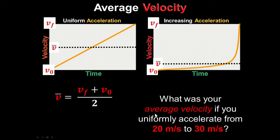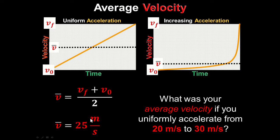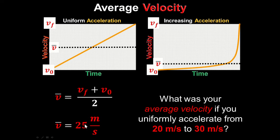Straightforward question: what was your average velocity if you accelerate uniformly from 20 meters per second to 30 meters per second? It's just the average of 20 and 30. Add 20 and 30, get 50, divide by 2 — 25 meters per second.